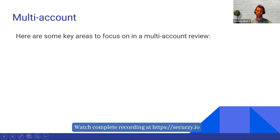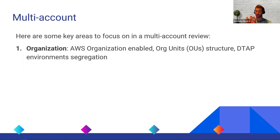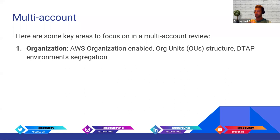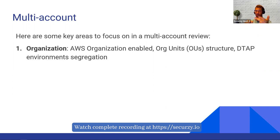That covers the detailed review for a single account. If you need to do a review for multiple accounts, you may need to review the different accounts one by one, especially the most critical ones. There are additional things to check: AWS Organizations — the service that allows managing multiple accounts — is it enabled? Are you using organizational units and how are you structuring them? You can structure by project, by business unit, or by environment type — development, test, acceptance, production. Are you segregating those into different accounts and using different OUs for that?